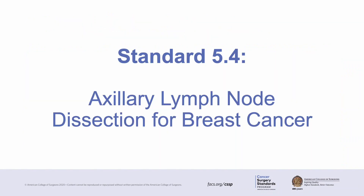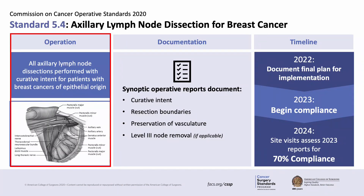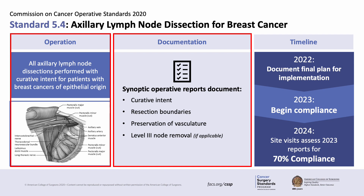We will now move on to discuss standard 5.4 on axillary dissection for breast cancer. There are two components for standard 5.4 that we will discuss in detail. The first occurs in the operating room: axillary lymph node dissections for breast cancer should include removal of level 1 and level 2 lymph nodes within the anatomic boundaries of the axilla, with preservation of key neurovascular structures. The second involves appropriate documentation. The operative reports for axillary dissection must document several key elements in synoptic format. Again, the standard will be applied to procedures being performed with curative intent, and the expected timeline for compliance is the same as for standard 5.3.